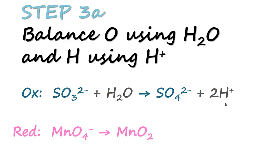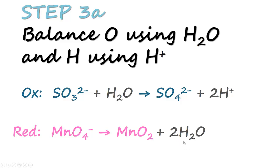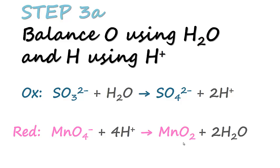Now we balance the reduction equation. For MnO₄⁻ to MnO₂ we have two extra oxygens on the left hand side, so we will add two H₂O on the right hand side. Now the oxygens are balanced, and that gives us an additional four hydrogens on the right hand side, which we will need to add four H⁺ to the left hand side.